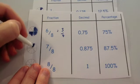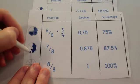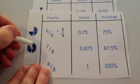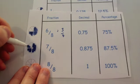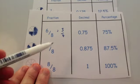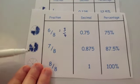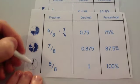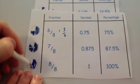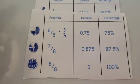Seven eighths is seven sections: 75% plus another 12.5% gives 87.5%, or 0.875. Eight eighths is the whole thing shaded in — 100%.